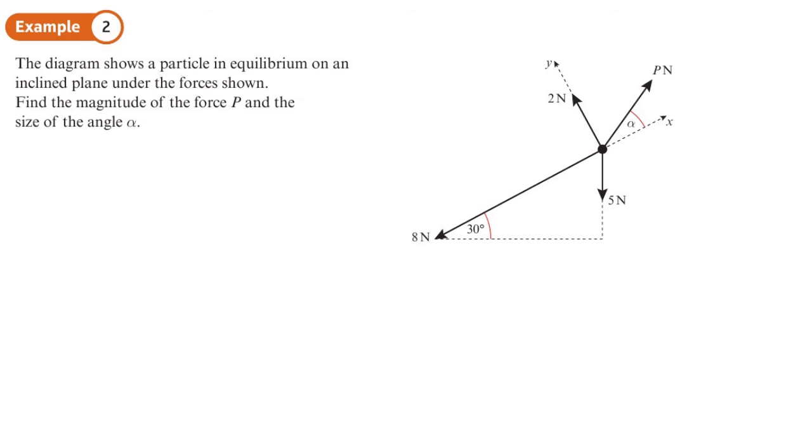So we have that keyword again, that it's in equilibrium. So that means the forces are balanced. Now, we could try and resolve horizontally and vertically that way. But there are some forces we wouldn't be able to work out what their components are. So actually, it's easier in this case to resolve parallel and perpendicular to the slope like that. And often when questions are on slopes, that's what we do.